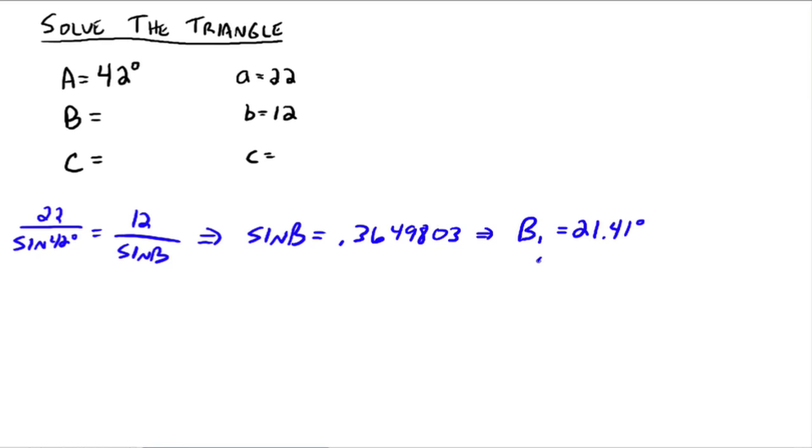But there's also a B2. How do you think we're going to get B2? Well, what quadrants? If your sine is positive, what quadrants from your unit circle would your angle be in? Quadrant 1, which would be this B1 situation, and also quadrant 2, because your sine is positive in quadrant 2. So how do you get to that angle? Well, you have to do 180 degrees minus 21.41 degrees, right? We're using that as the reference angle to give you 158.59 degrees.